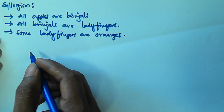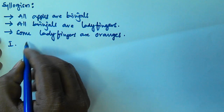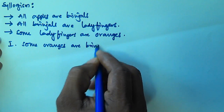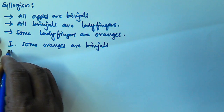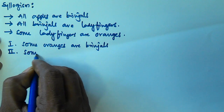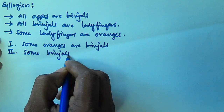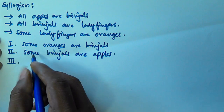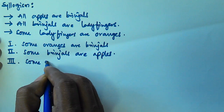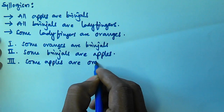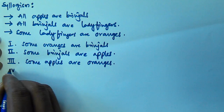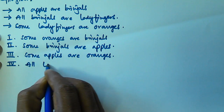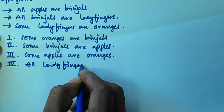The first conclusion given is Some oranges are brinjals. The second conclusion given is Some brinjals are apples. The third conclusion given is Some apples are oranges. And the fourth conclusion given is All ladyfingers are apples.